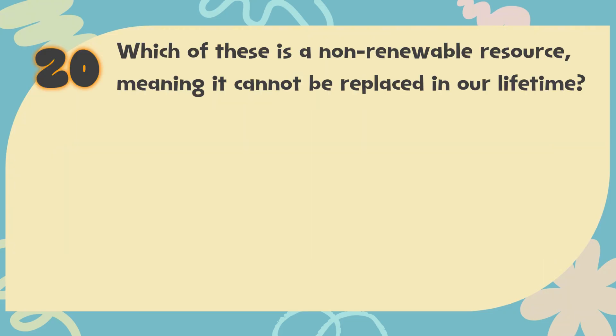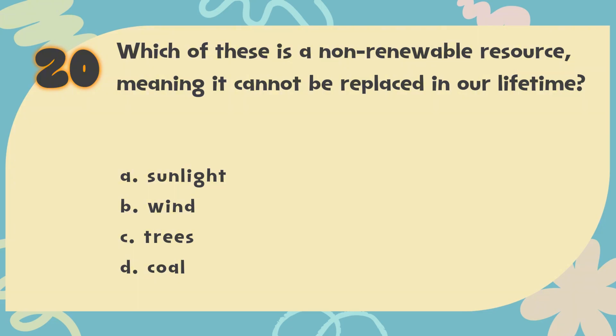Number 20: Which of these is a non-renewable resource, meaning it cannot be replaced in our lifetime? The choices are: A. Sunlight, B. Wind, C. Trees, D. Coal.